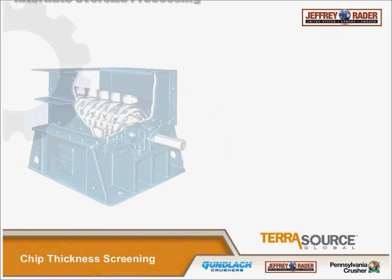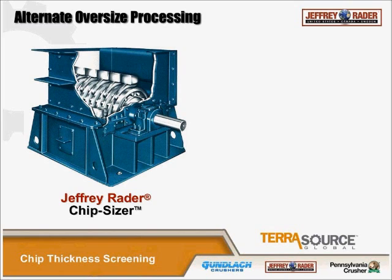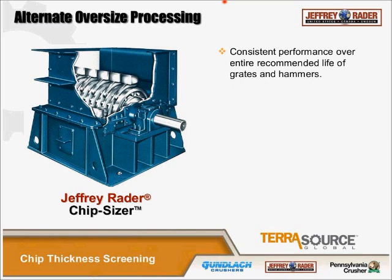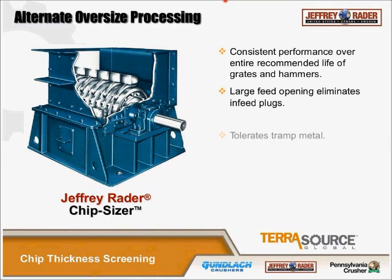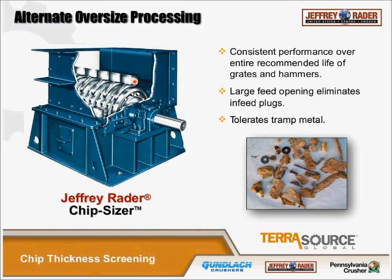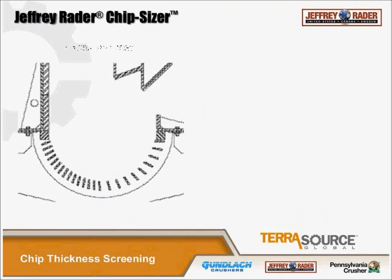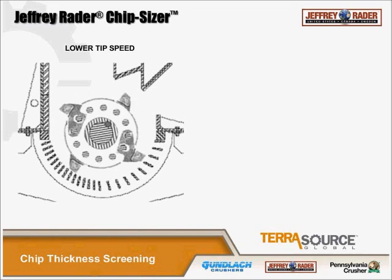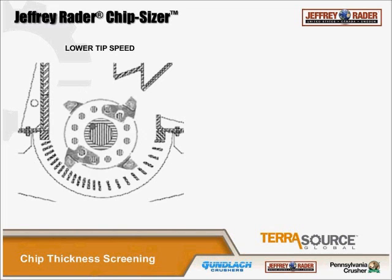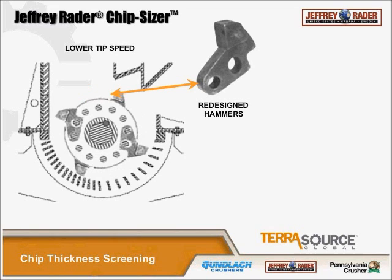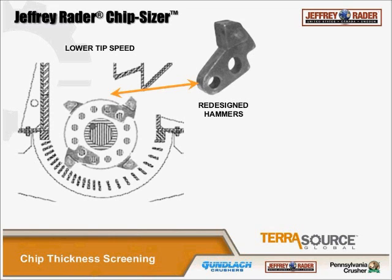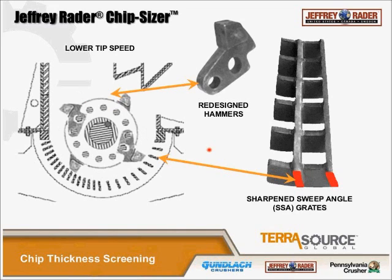There's an alternative to oversized processing: the Jeffrey chip sizer. Some advantages include performance over the entire recommended life of the grates and hammers, large heat openings with no chance of plugging, and it tolerates tramp metal quite well because it uses hammers and grates with generous openings. The chip sizer has a lower tip speed than a regular hog, so it does more cutting than crushing. The hammers have been redesigned from regular hog hammers to promote better chip reduction, with sharpened sweep angles to provide a better cut through.